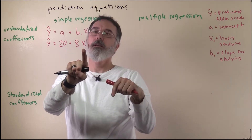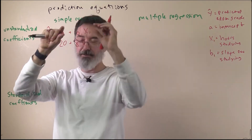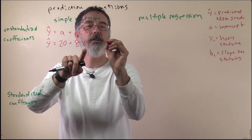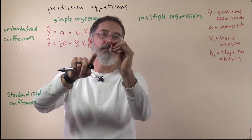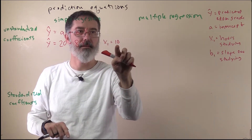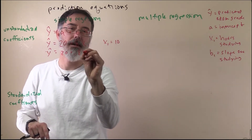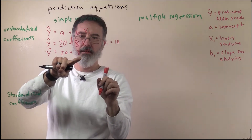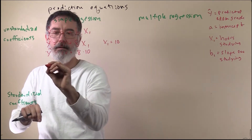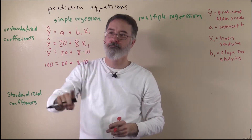Usually people do study. Given a data set that produces this prediction equation, when a new person shows up we can plug in their value. We will say somebody studies 10 hours a week, so we plug their 10 hours in. We get ŷ equals 20 plus 8 times 10, which gives us 80 plus 20 equals 100. So if somebody studies 10 hours a week, we predict they are going to get a perfect grade — probably what you should be doing.